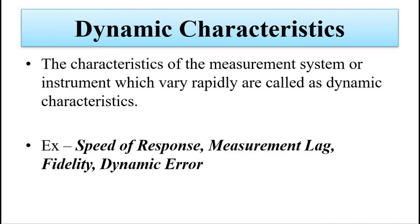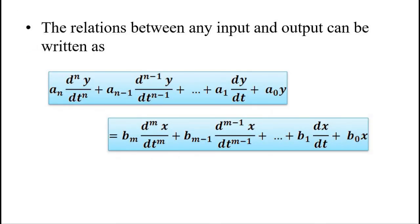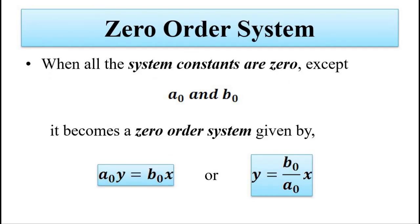Here we have discussed the dynamic characteristics of measuring instruments, the dynamic behavior, and how to represent the dynamic relationship between input and output, including zero-order systems. I hope you liked this video. Please subscribe to Engineering Tutorial for more videos related to engineering, science, and technology. Have a great day, thank you very much.